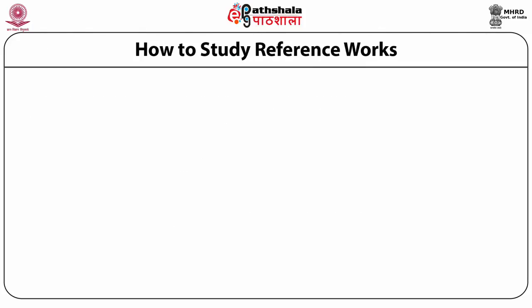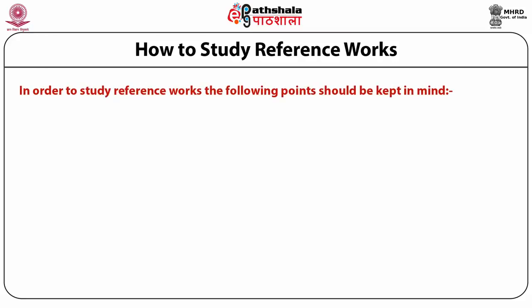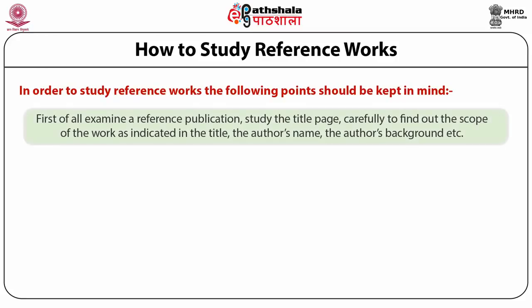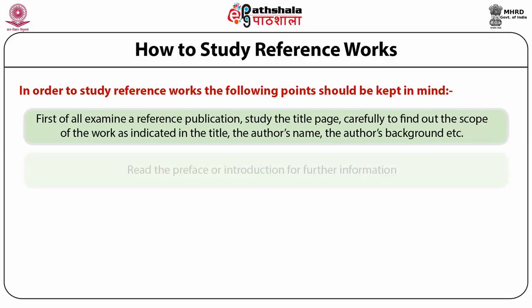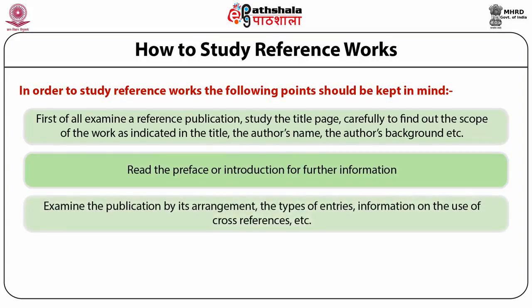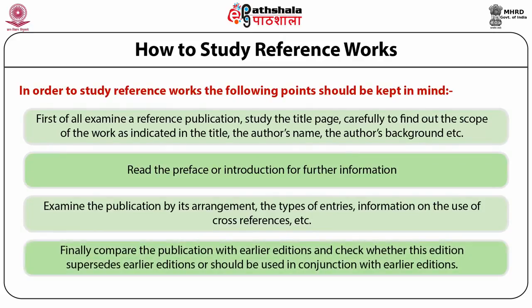How to study reference works: number one, examine a reference publication — study the title page carefully to find out the scope of the work as indicated in the title, author's name, author's background, etc. Number two, read the preface or introduction for further information. Number three, examine the publication by its arrangement, that is, the type of entries, information on the use of cross references, etc. Number four, finally compare the publication with earlier editions and check whether this edition supersedes earlier editions or should be used in conjunction with earlier editions.